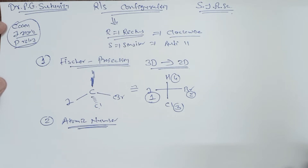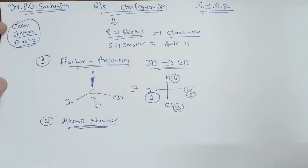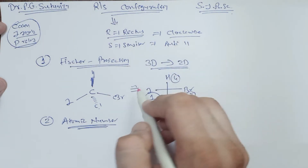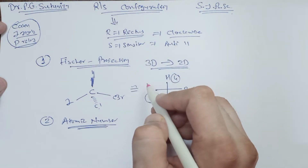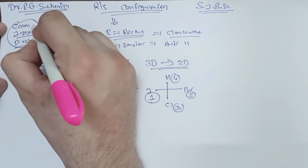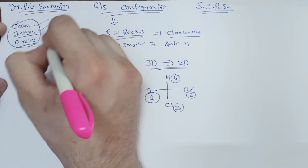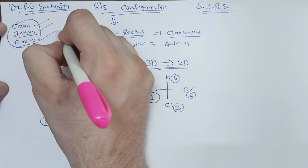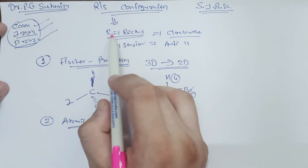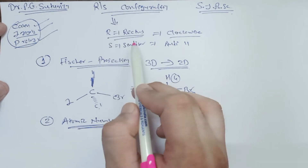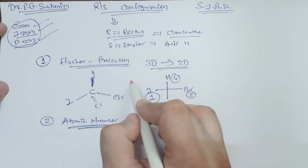What do we mean by R and S? R and S are derived from Latin words — Rectus, which means clockwise, and Sinister, which means anti-clockwise. The three scientists, namely Cahn, Ingold, and Prelog, suggested this RS nomenclature for chiral compounds.